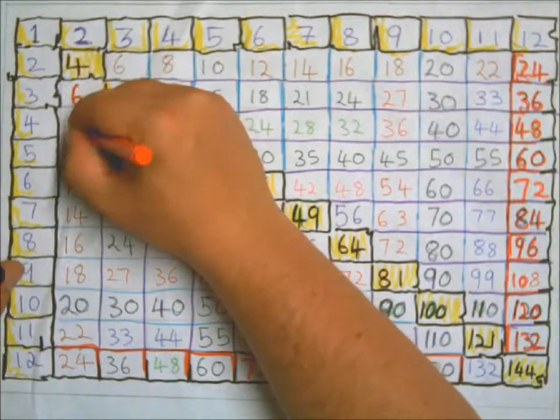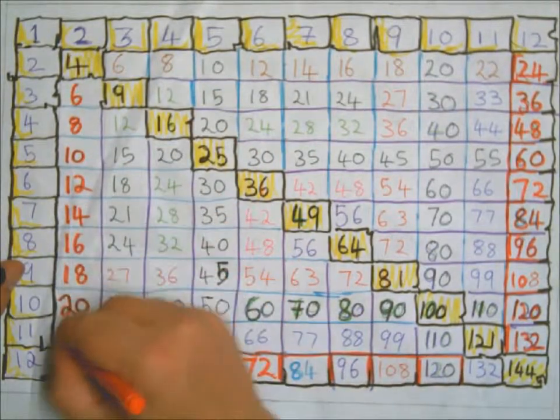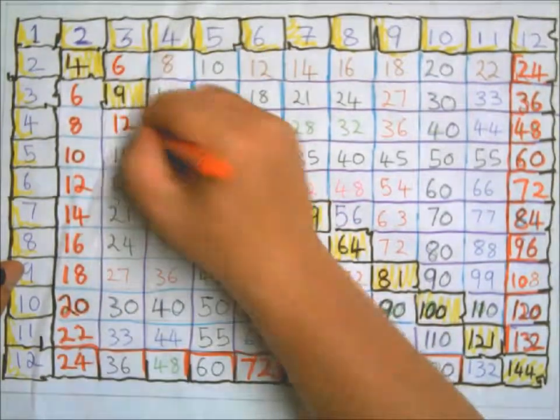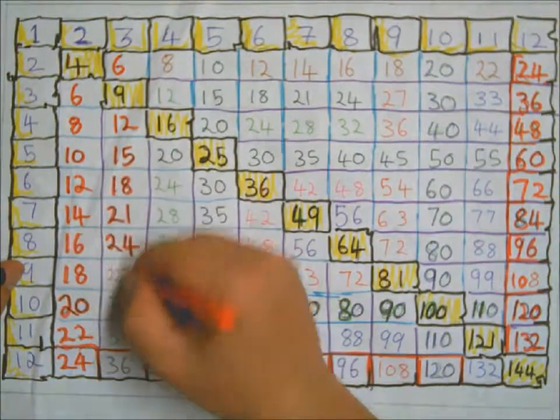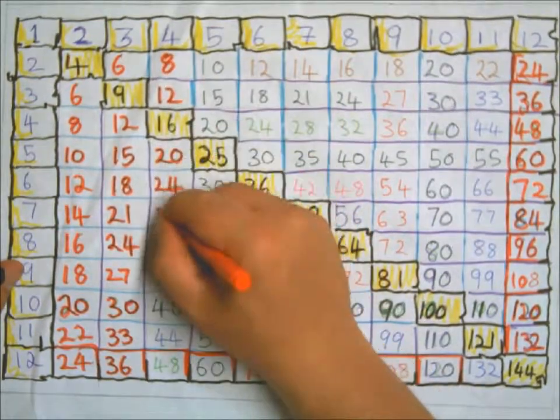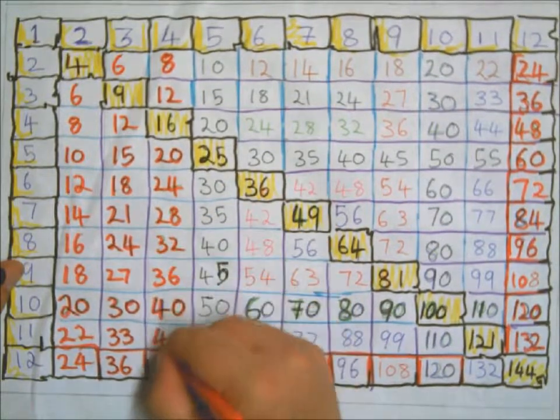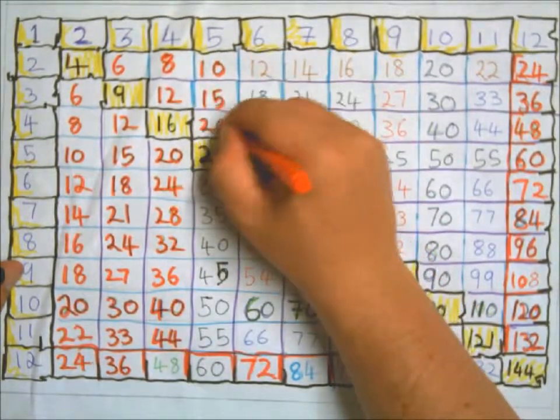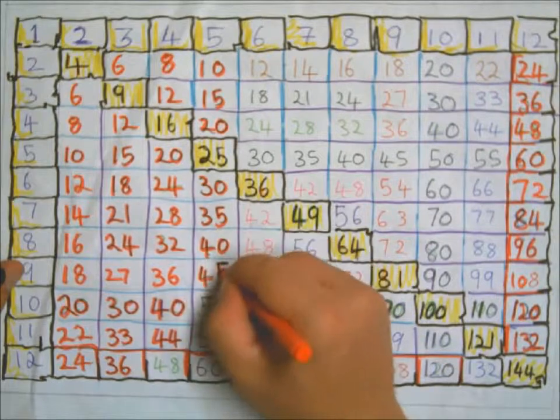49, 64, 81, 100, 121, and 144. Now once you've done that, then you can go down the columns or across the rows and start to see those patterns. Look for 24 - how often 24 turns up.